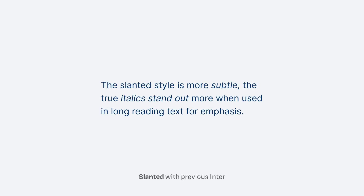Originally, Inter was equipped with a slant axis, which is more aligned with the aesthetics of the neo-grotesque sans-serif that Inter is — just look at Helvetica or Univers. Both have slanted shapes, and this is not wrong, it's just different. The slanted style is more subtle, while the true italics stand out more when used in long reading text for emphasis. Compared to its predecessor, this brings an advantage, making Inter 4.0 suitable for serious long reading text, especially with that emphasis.